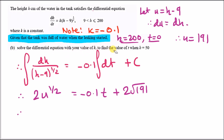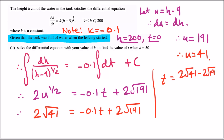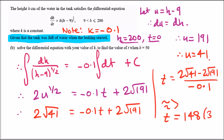Now plug in h equals 50 to find t. When h is 50, u equals 50 minus 9, which is 41. So we have 2 times the square root of 41 equals minus 0.1t plus 2 root 191. Rearranging to make t the subject: t equals (2 root 41 minus 2 root 191) over negative 0.1, giving t approximately equal to 148, to 3 significant figures.